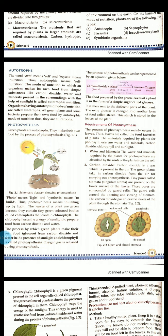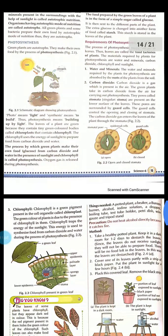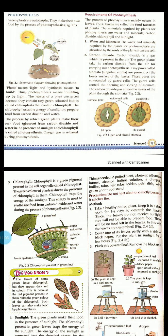The organisms that prepare their own food using CO2, water and minerals present in their surroundings through autotrophic nutrition are called autotrophs. All green plants and some bacteria fall in this category. They make their own food through the process of photosynthesis.